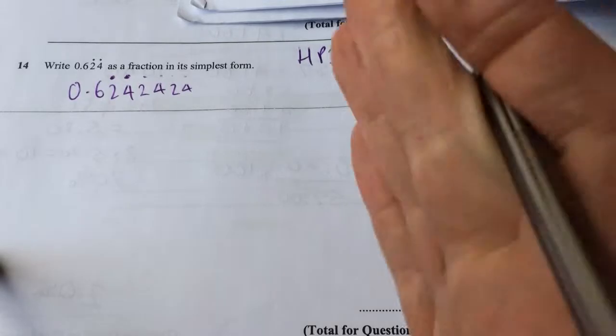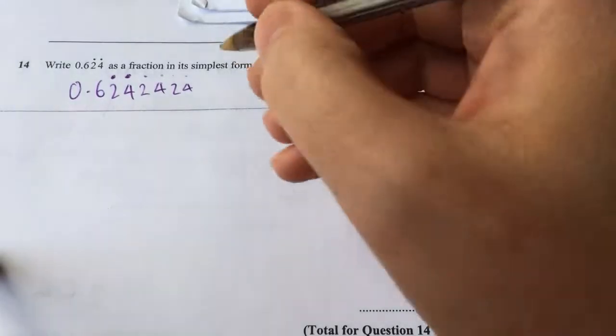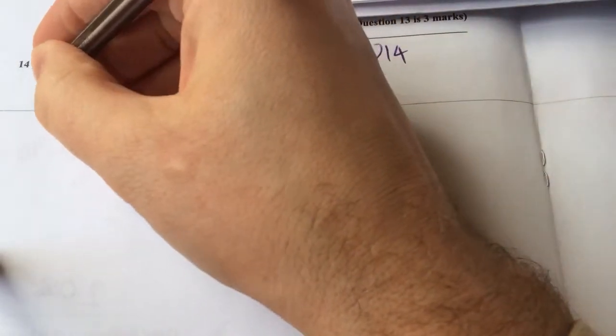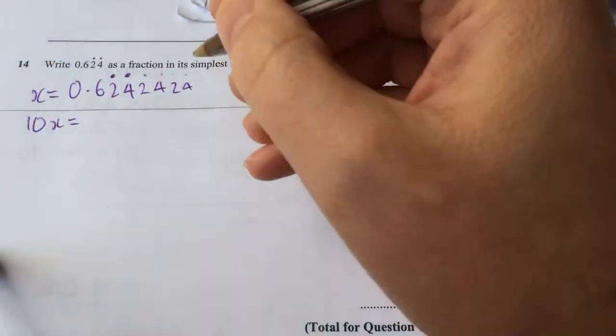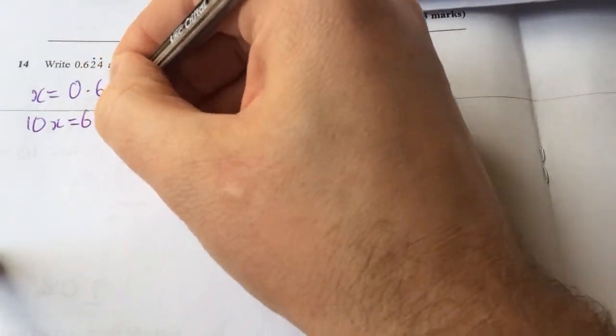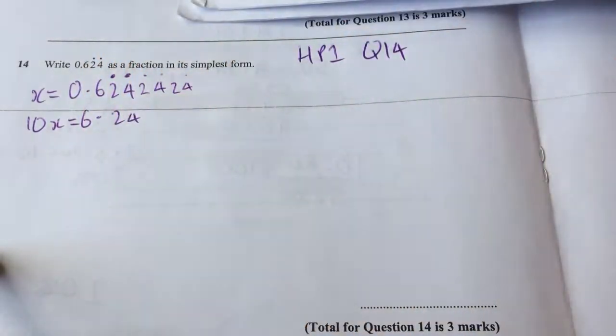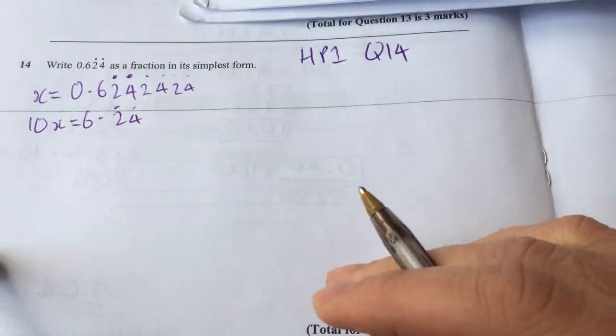We're going to have to move by two place values. So the first thing we're going to do is let x equal that number and then times it by 10x. So I'm going to get 6.24 recurring, and then I'm going to times it by 1,000.